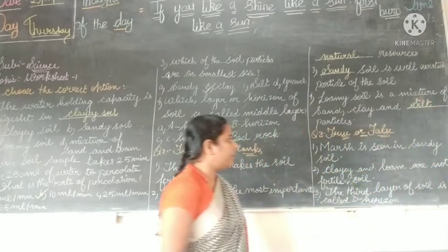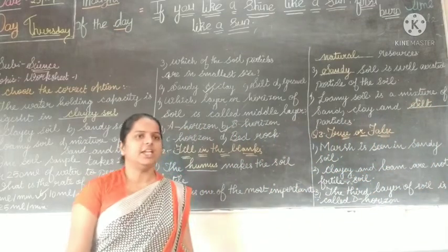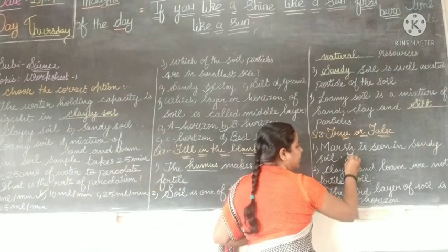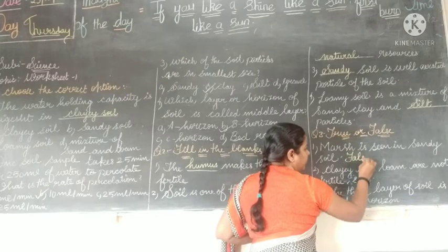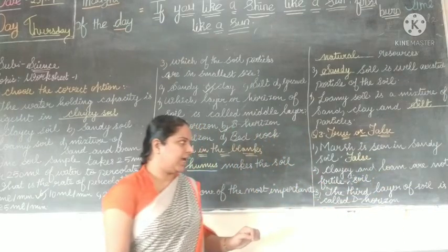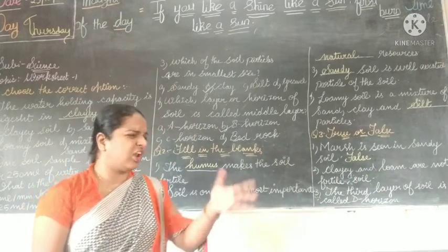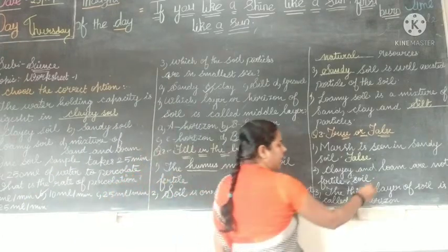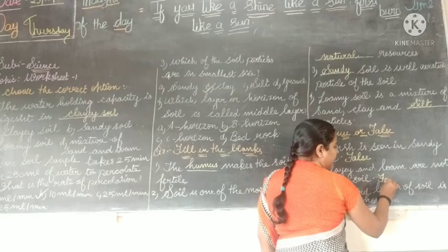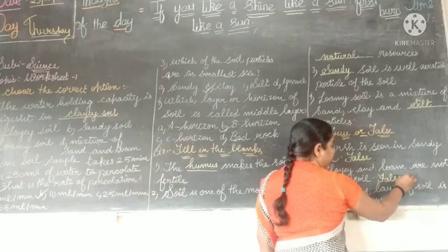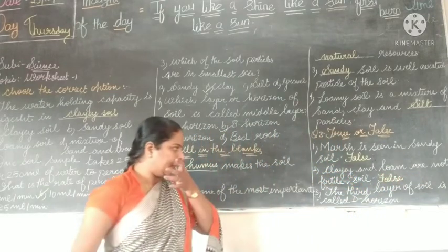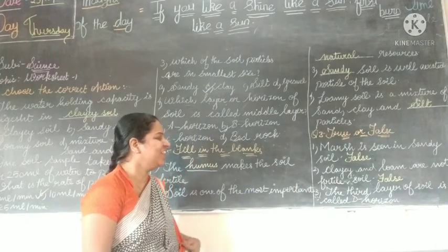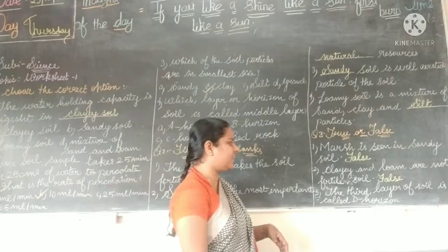Next, true or false: marsh is seen in sandy soil — the fertile soil in marsh takes time. Clay soil. Clay soil and loamy soil are not fertile soils — false, because they are fertile soils. Last question of true or false: the second last question.